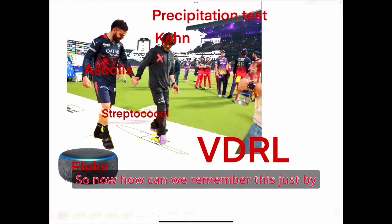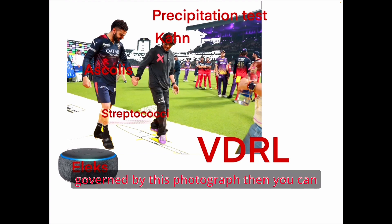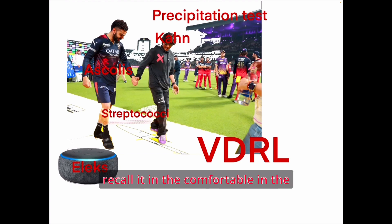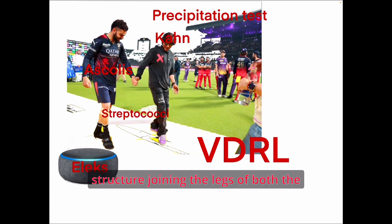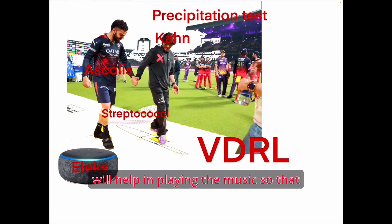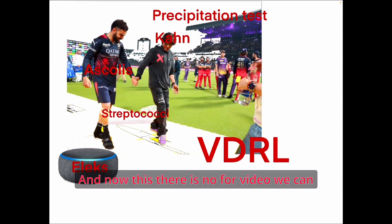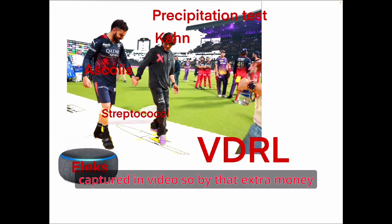How do you remember all this? Just by knowing that precipitation tests are represented by this photograph. In the exam you can recall: Kohli's test for Ascoli's test, Khan for the Kahn test, the streptococcal chain-like structure joining the legs of both gentlemen, Alexa playing the music so they can dance, and the whole scene being captured in a video — which stands for VDRL.